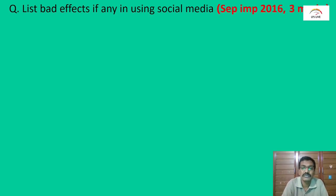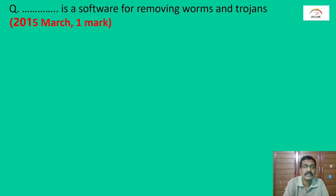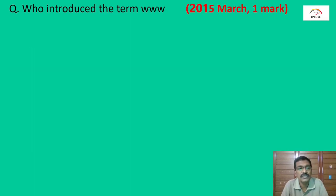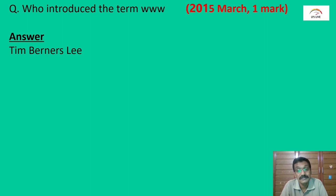List the bad effects of using social media: intrusion to privacy, addiction, and spread of rumors. The software for removing worms and Trojans is antivirus software. The last question: who introduced the term WWW? The answer is Tim Berners-Lee. WWW stands for World Wide Web. That concludes this chapter — thank you.